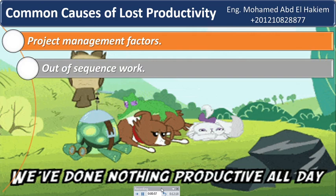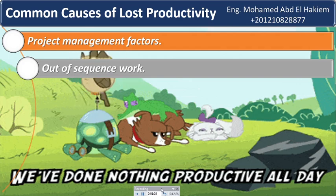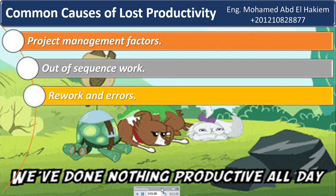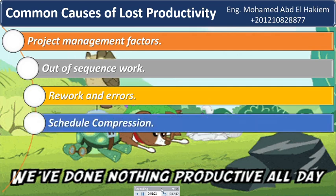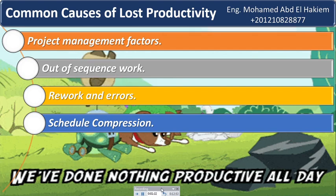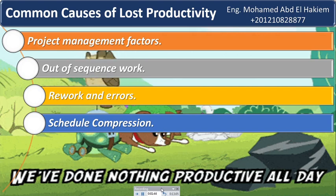Twenty: out-of-sequence work. When work does not proceed in a logical sequence, productivity is likely to be negatively impacted as crews are moved around the site haphazardly. Twenty-one: rework and errors. When work in the field must be done more than once in order to get it right, productivity may suffer. Twenty-two: schedule compression. It may result in overmanning because shortening the overall duration requires completing the total remaining work faster. Schedule compression, when associated with overmanning, often results in significant productivity losses due to dilution of supervision, shortages of materials, tools or equipment, increased difficulty in planning and coordinating work, and shortages of skilled labor.